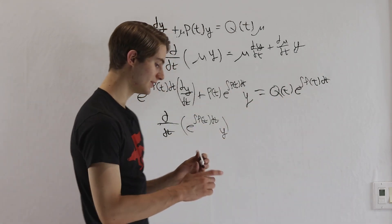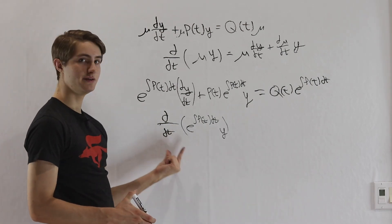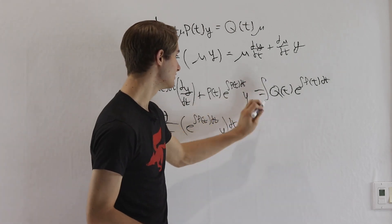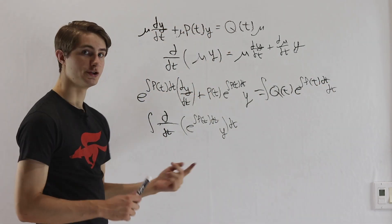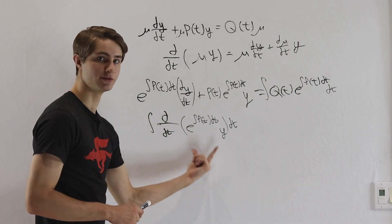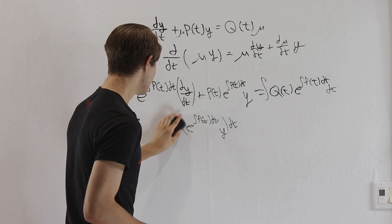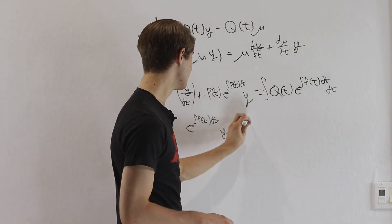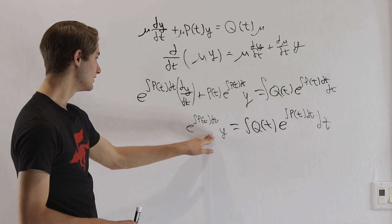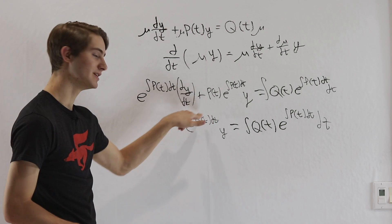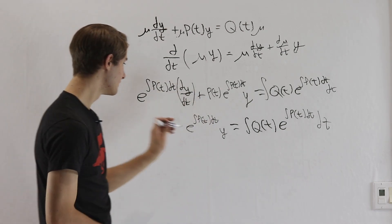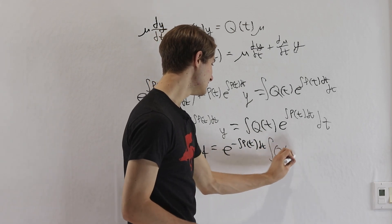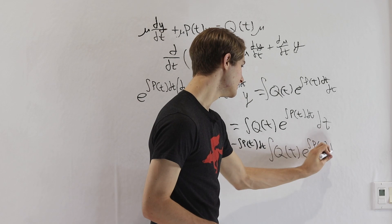This equals q(t) times e to the integral of p(t) dt on the right side. If we want to isolate y, all we have to do is take the integral of both sides. The integral and derivative cancel out, giving us e to the integral of p(t) dt times y equals the integral of q(t) times e to the integral of p(t) dt, dt. Then we multiply by e to the negative integral of p(t) dt to isolate y.